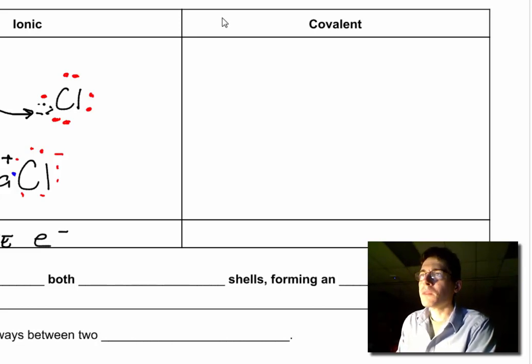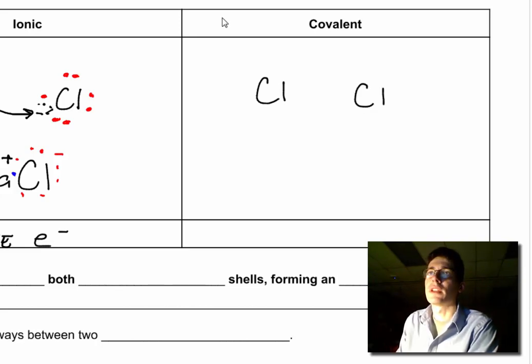Covalent's a little bit different. We can have two chlorine atoms and they need to bond. The chlorine on the left is going to have seven valence electrons. So we do one, two, three, four, five, six, and seven in blue.